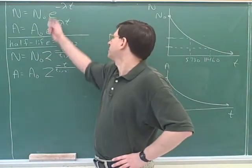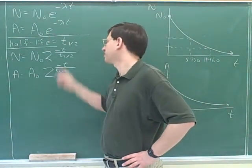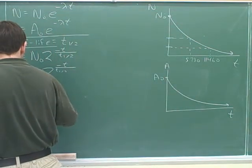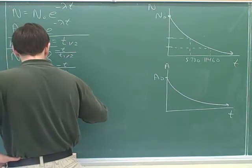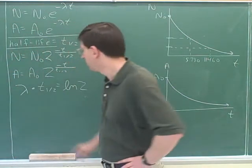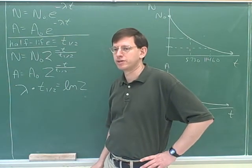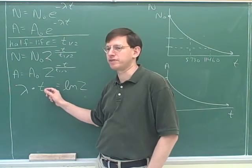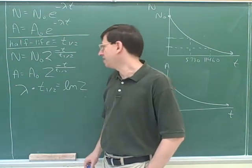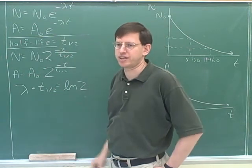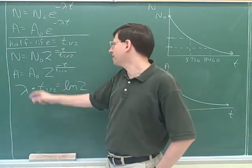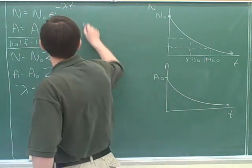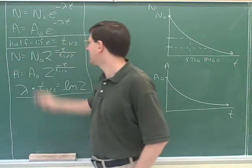If you're given a problem with lambda, you probably want to use one of these equations. If you're given a problem with half-life, you probably want to use one of these. However, here's our last equation, lambda times the half-life equals the natural log of 2. But this means that if you know lambda, you can figure out the half-life. Or if you know the half-life, you can figure out lambda. And that means it's just a matter of taste, whether you want to use the lambda equations or the half-life equations. Even if you're given lambda, you can still use the half-life equations. You just have to figure out the half-life using this.